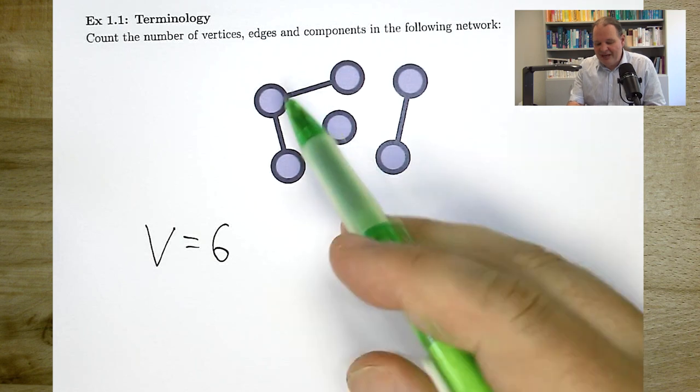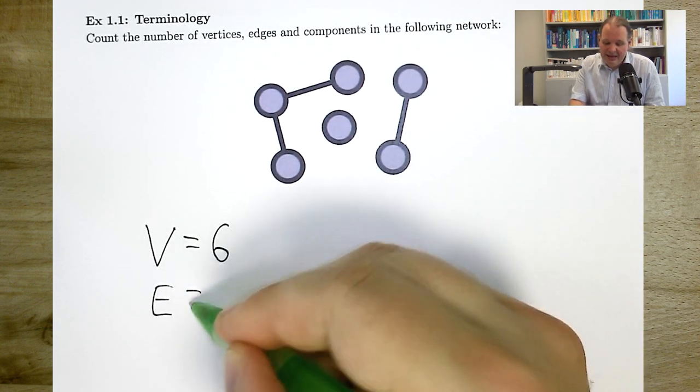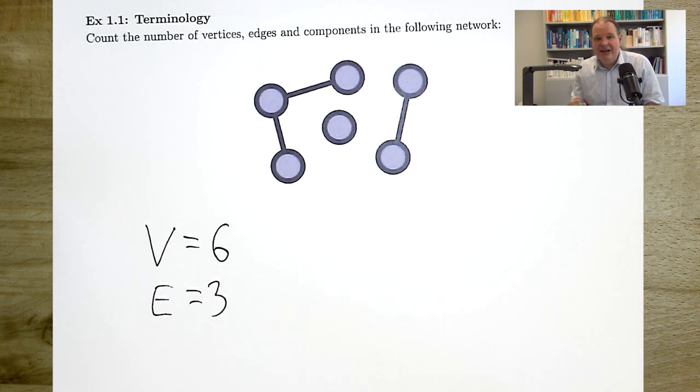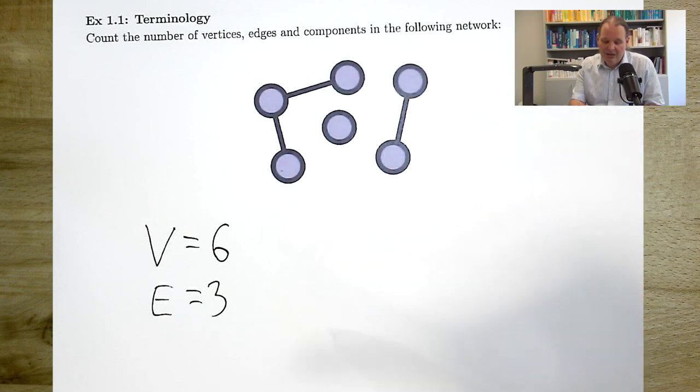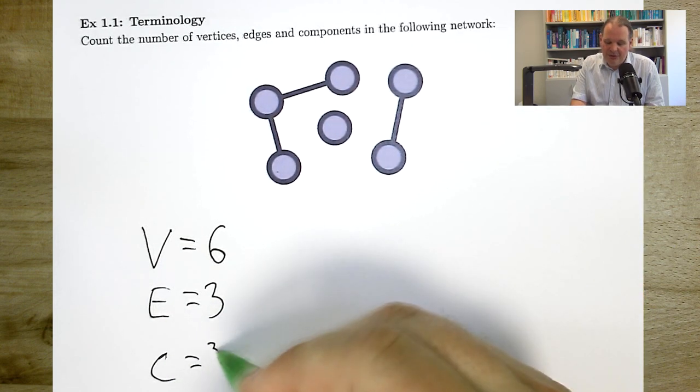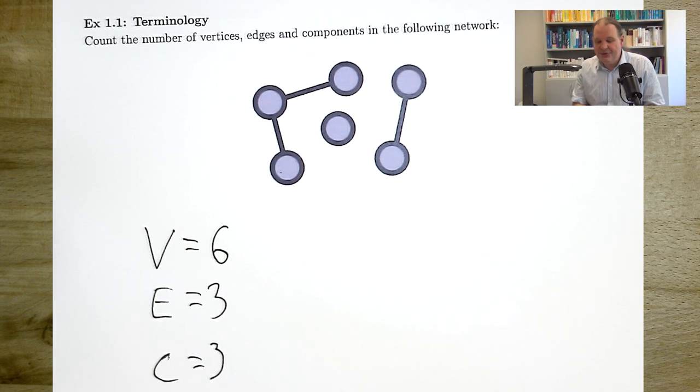Now we also need to count the number of edges. Edges are the links, so 1, 2, 3. So we have 3 edges. And now, finally, we need to count the number of components. Components are the connected bits, so 1, 2, 3. So we have 3 components.